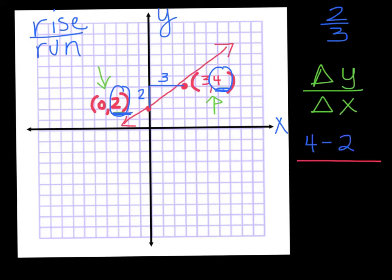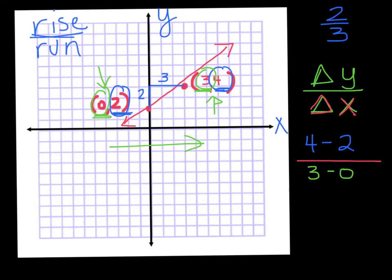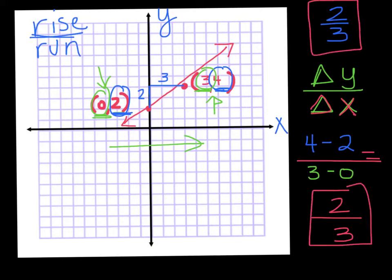That's my change in my Y — how much I'm going up — same as the rise. Now for the bottom I need to find the change in the X. My two X coordinates are 0 and 3. From 0 to 3, I went over 3 — the X is how much I go over. So I find the difference: 3 minus 0. Working this out: 4 minus 2 gives me 2, and 3 minus 0 gives me 3. So I get a slope of 2/3, the same as when I counted on the graph.